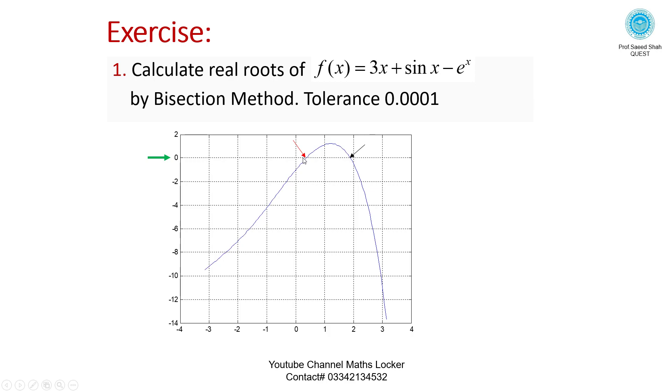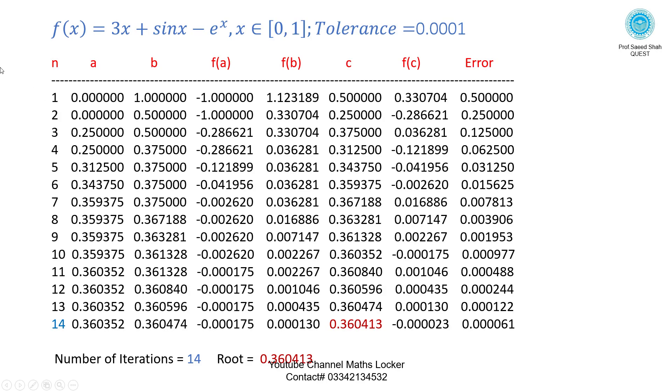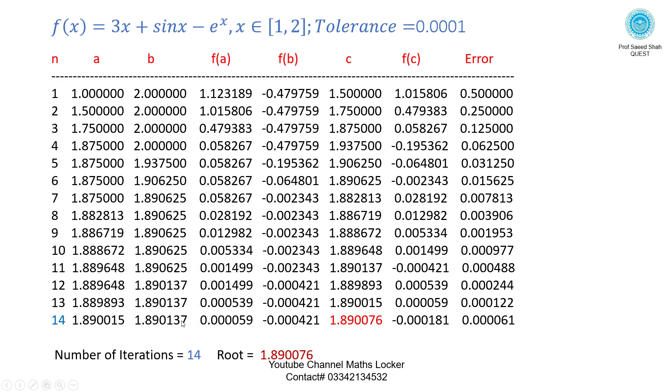Here is a root lying in the interval 0 and 1. Here is a root lying in the interval 1 and 2. Calculate the real root between 0 and 1. The answer is here up to 14 iterations. Extra root between 1 and 2. This is a root after 14 iterations.